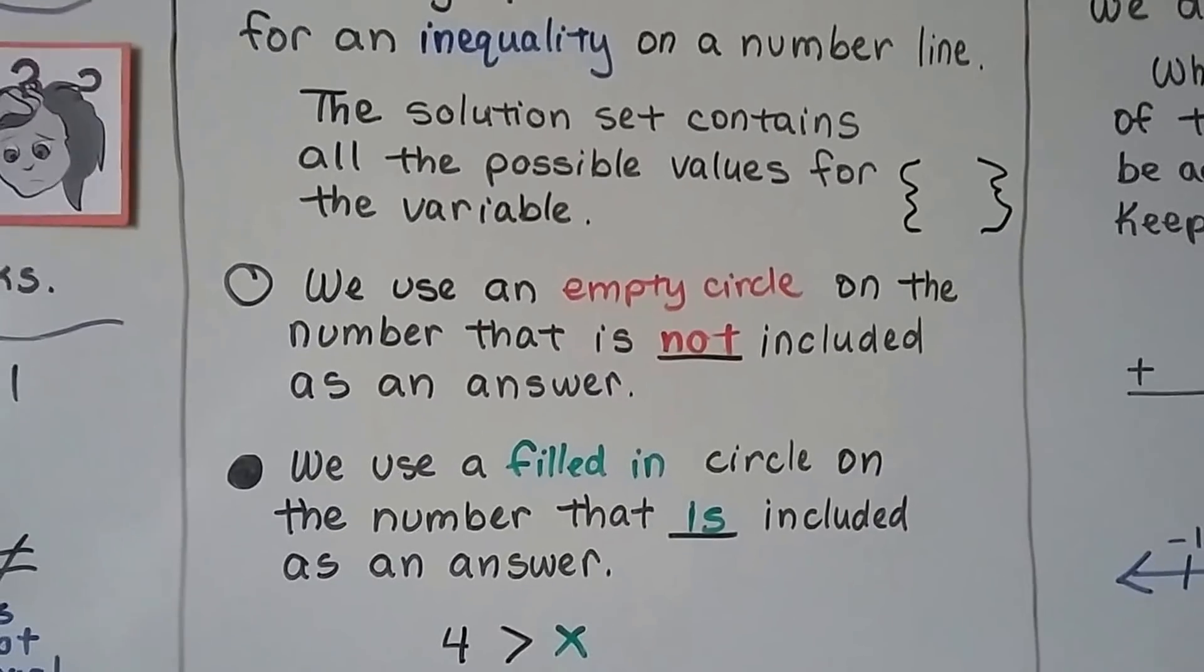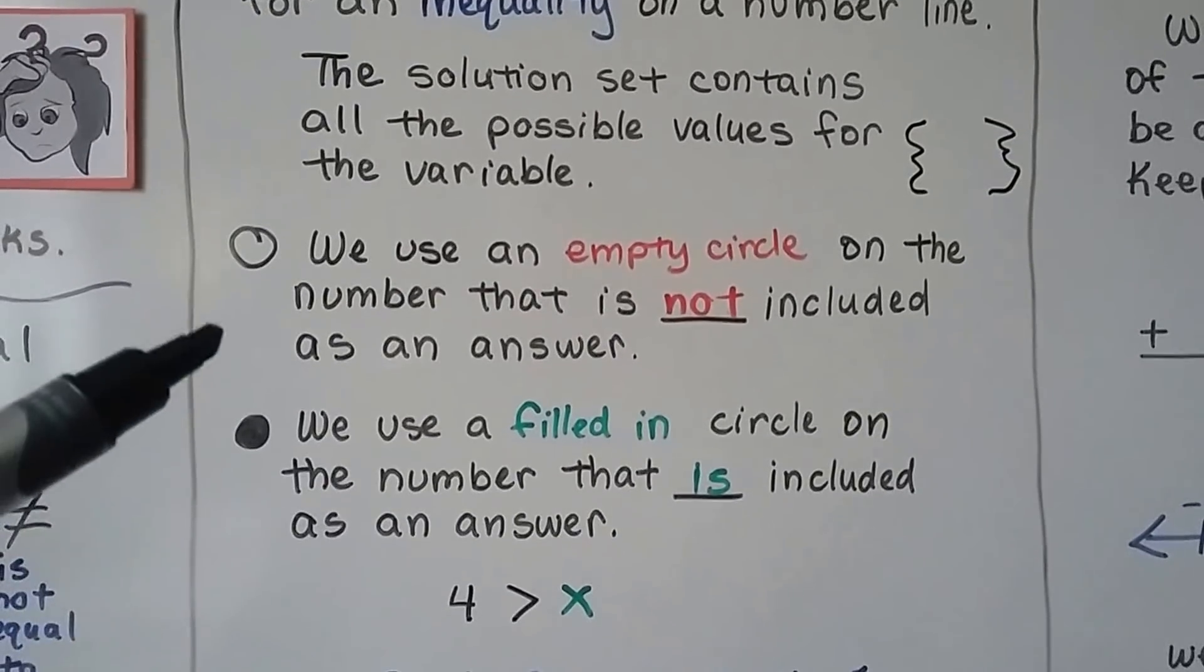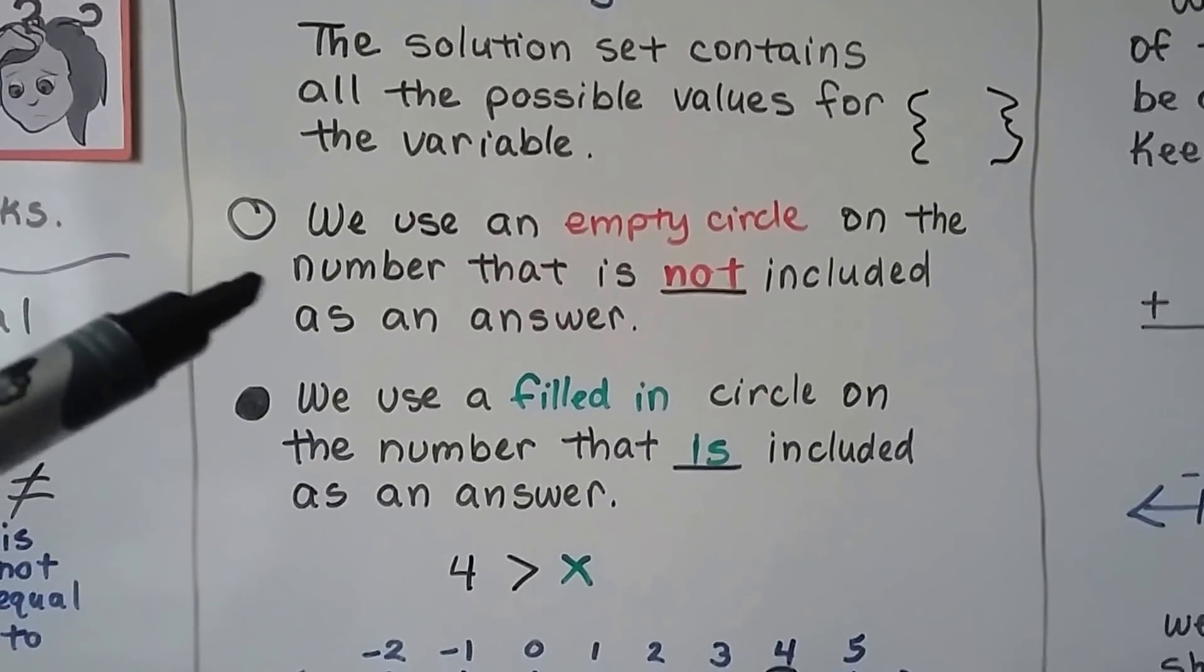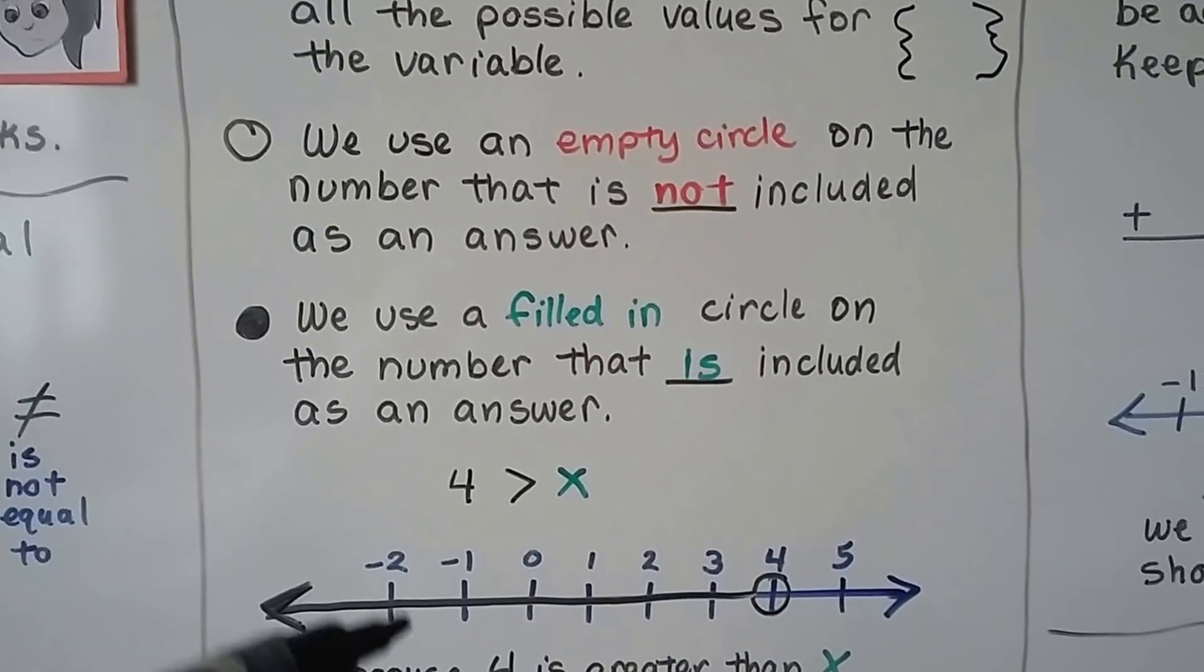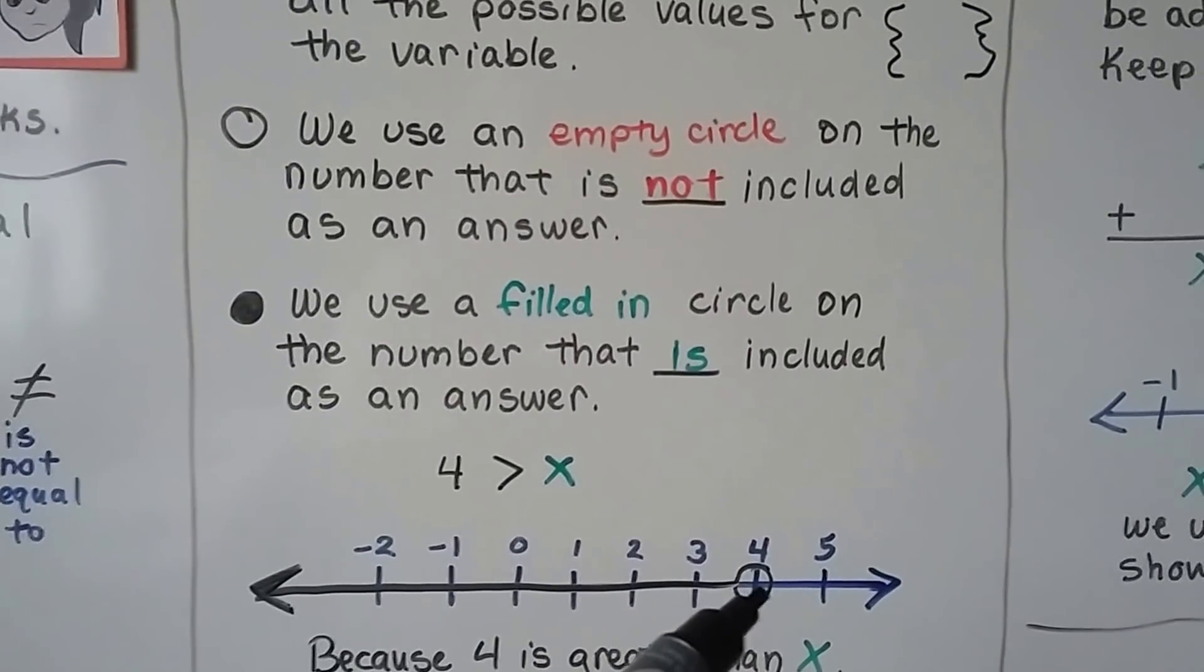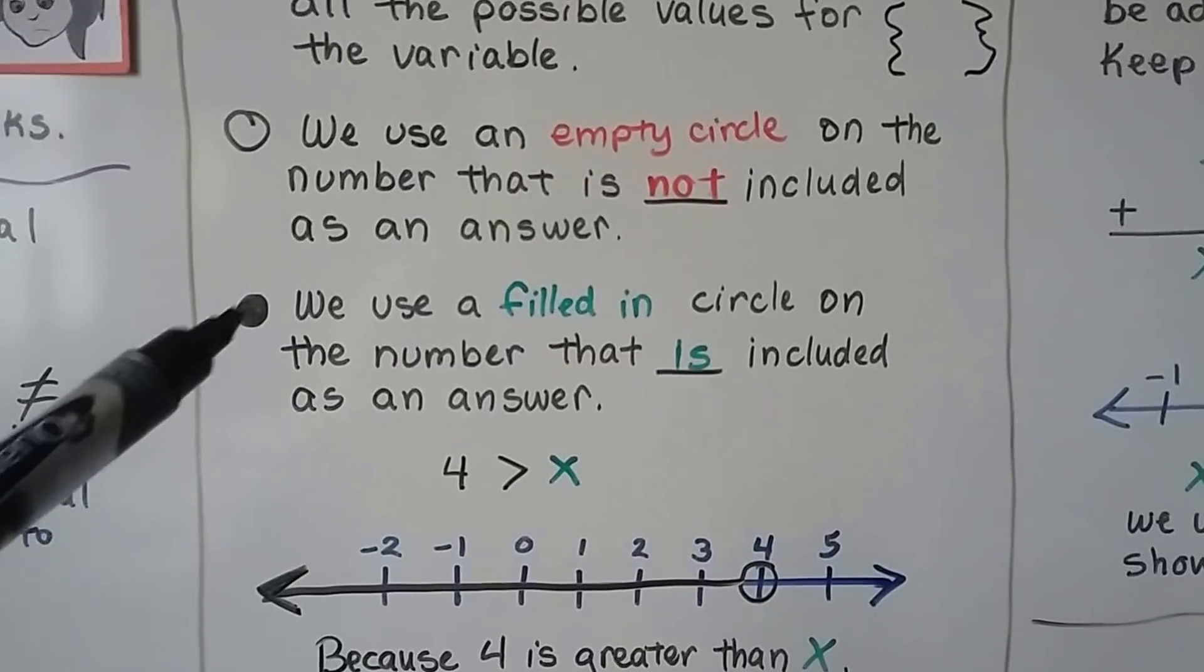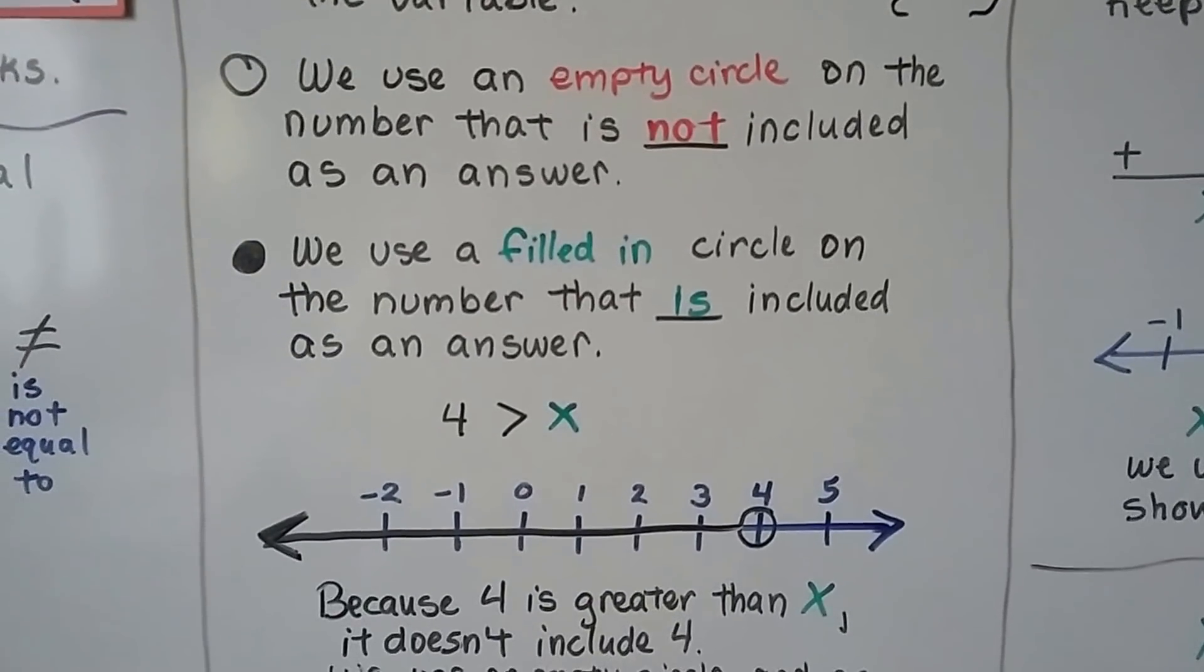So it contains all the possible values for the variable. And we're going to use an empty circle on a number line when it's not included in the answer, and we're going to use a filled in circle on the number line when it is included in the answer.